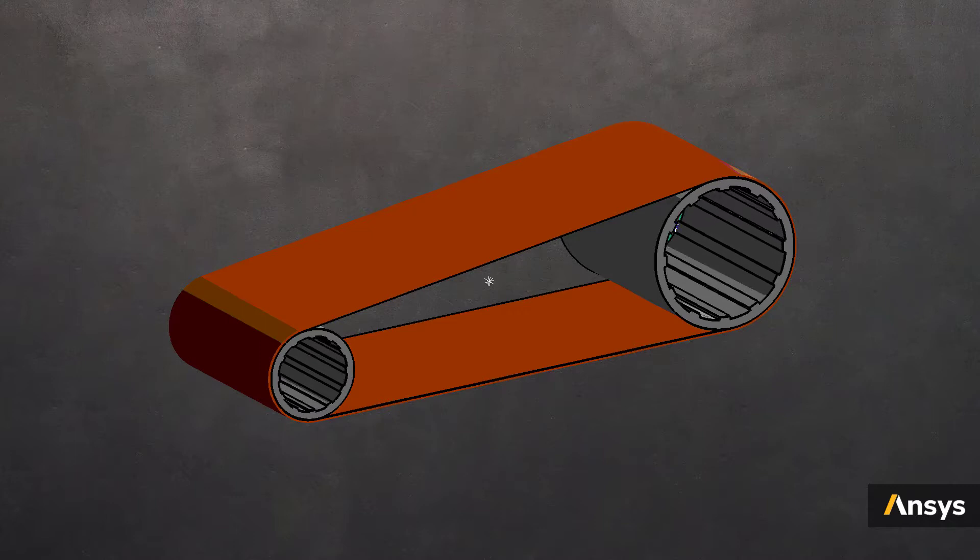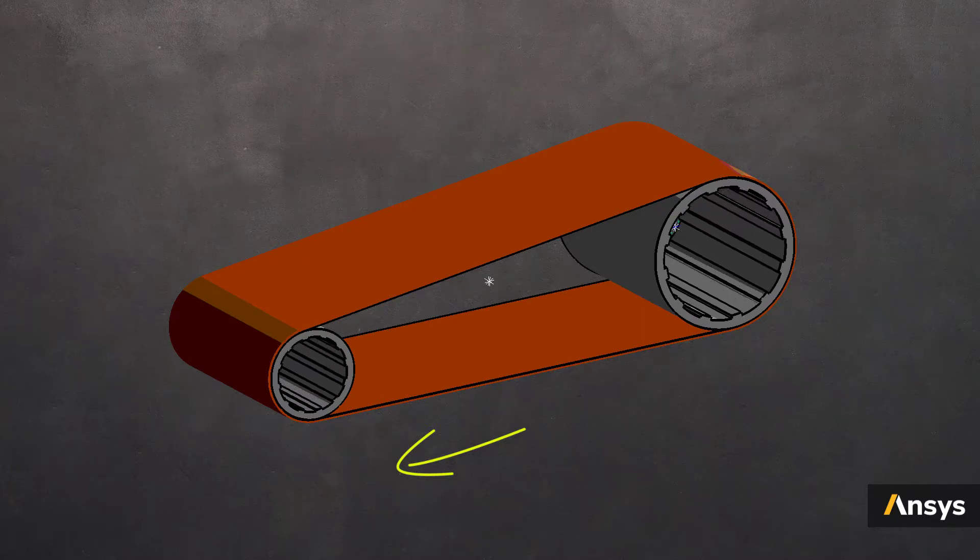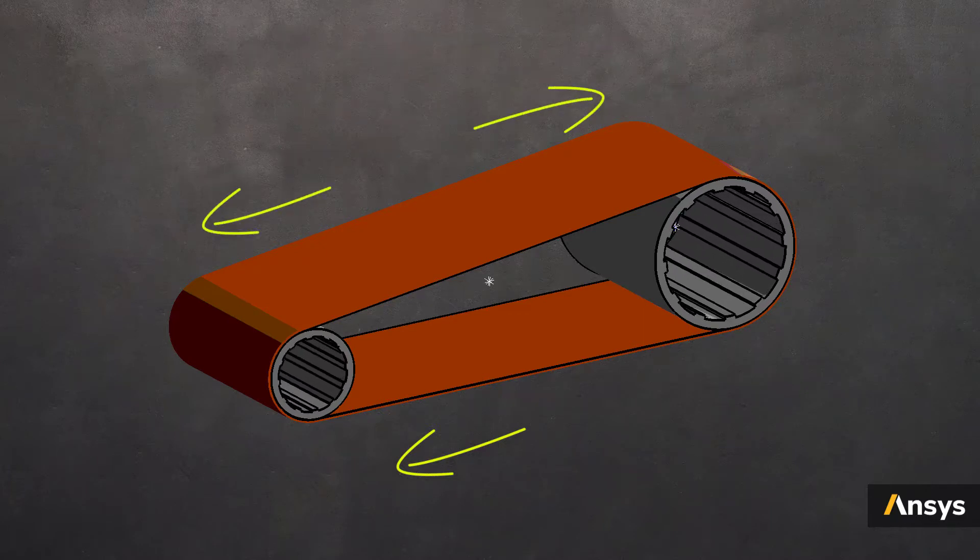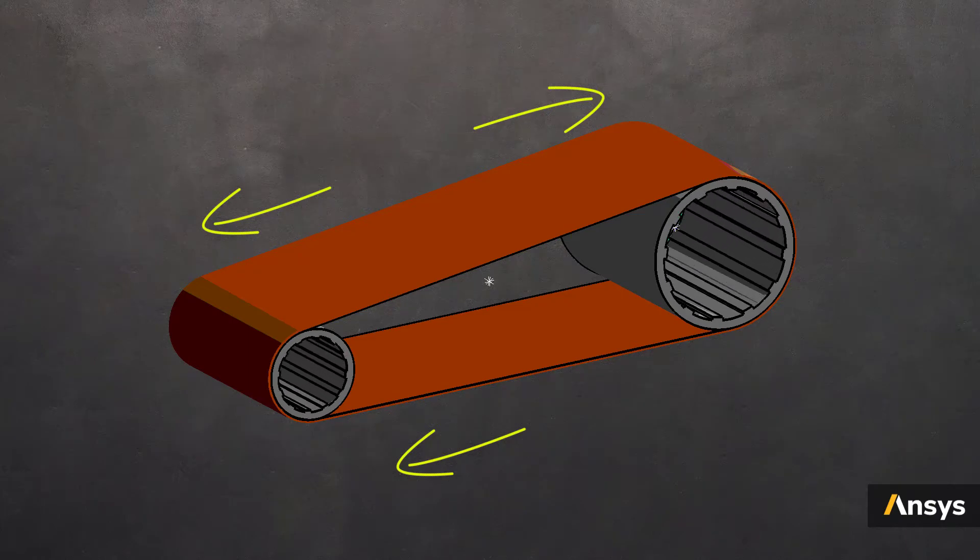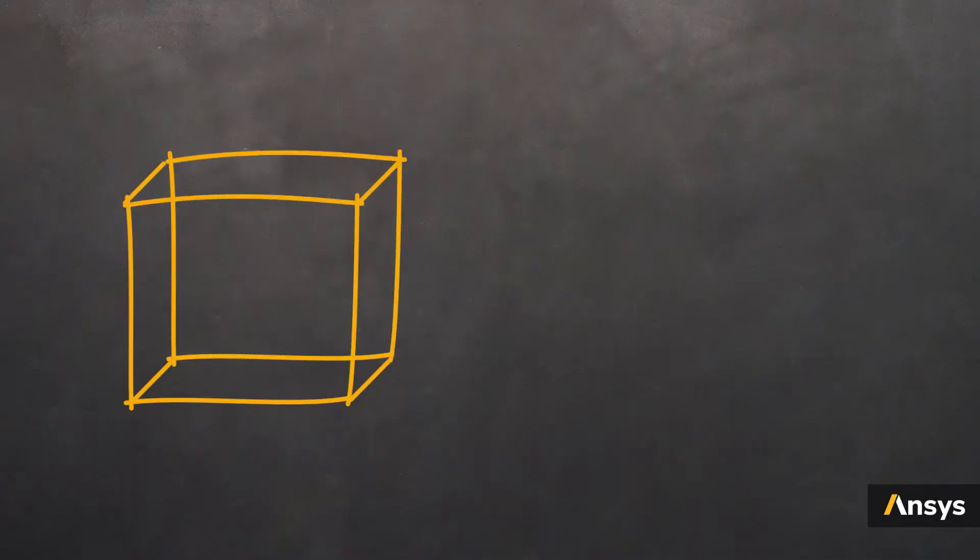Let's take this belt drive as an example. The driver is constantly pulling the driven on one side and as a result, the upper part of the belt is always in a uniaxial stress state. Let's focus on a small block taken out of this belt material and see how the Hooke's law is applicable here.